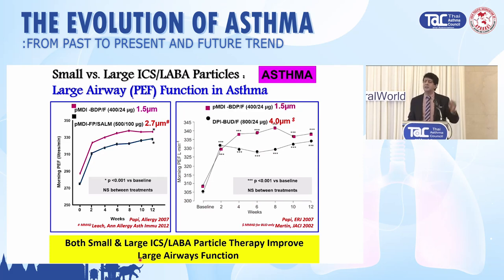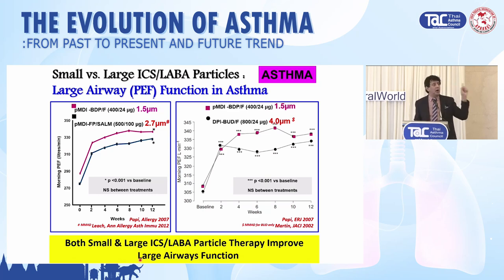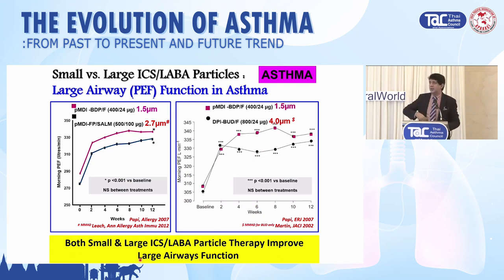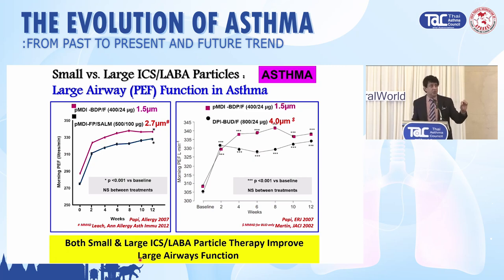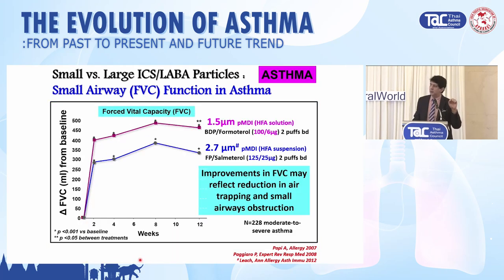This study compared small versus large ICS-LABA particles on peak expiratory flow. Many people say small extra fine particles go to the small airways but don't treat the large airways — that's wrong. They treat both the large and small airways. You see an improvement on the y-axis with peak expiratory flow. So small and large ICS-LABA improve large airways, but only small particles improve small airways.